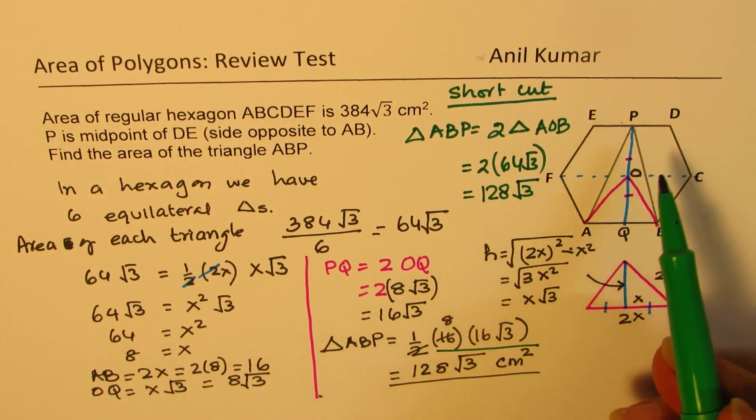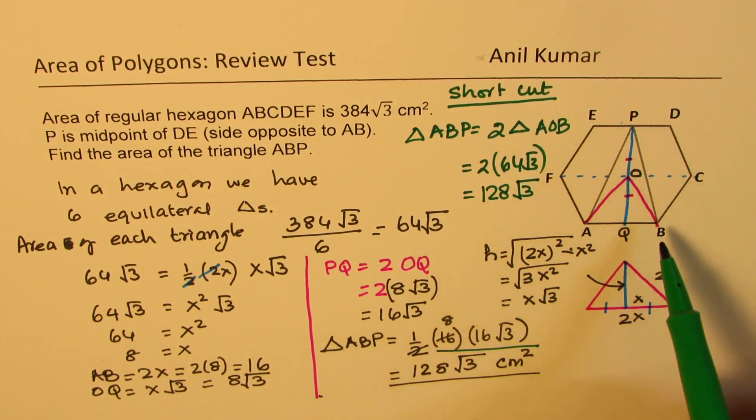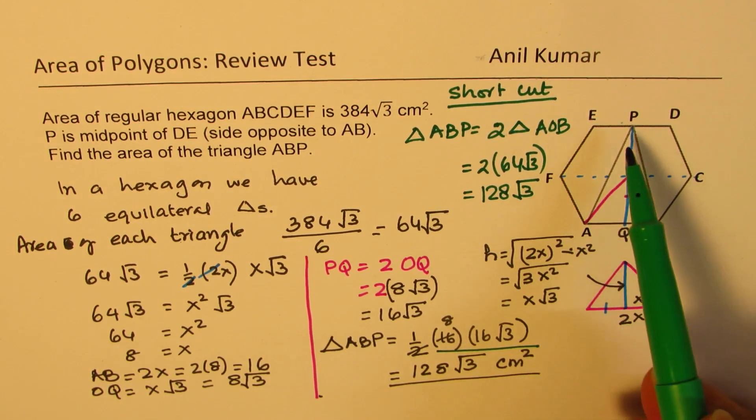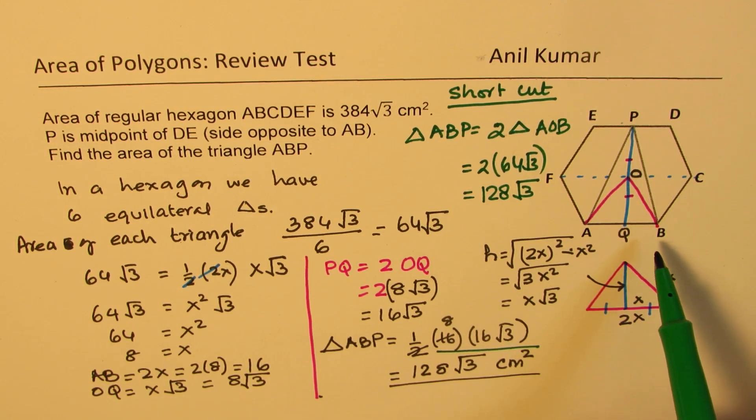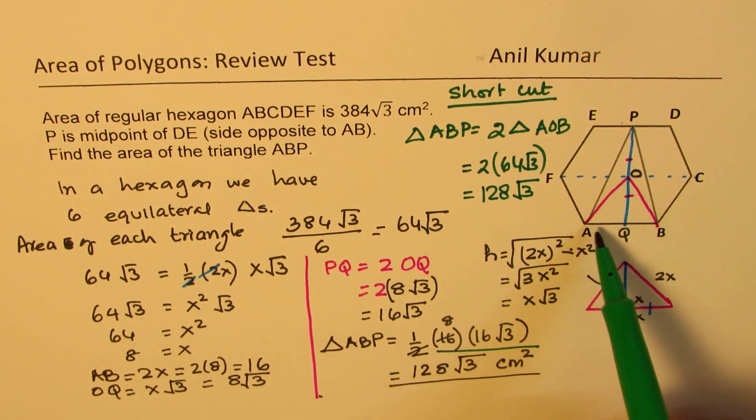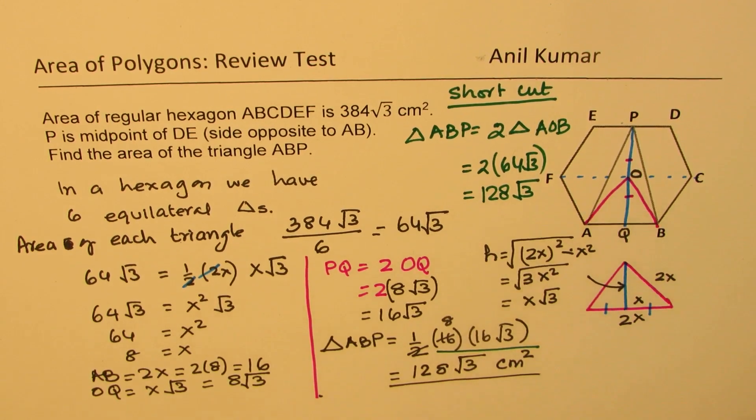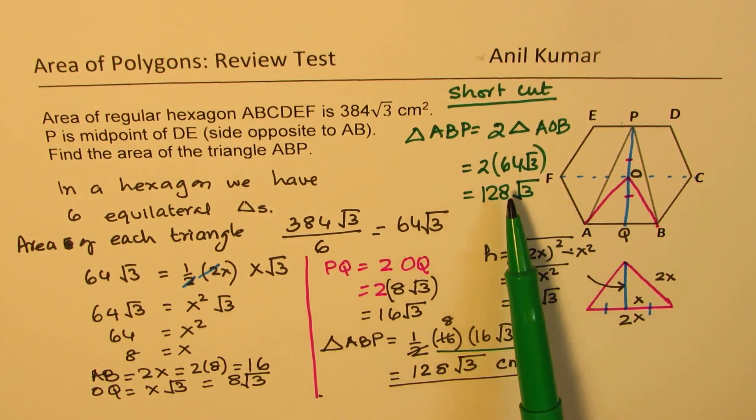In any hexagon, if that is the situation, then the area of this triangle shown will be twice area of each triangle. Is that clear to you? I hope that trick helps you to answer many multiple choice questions. Feel free to write your comment, share your views, and if you like and subscribe to my videos, that would be great. Thanks for watching, and all the best.